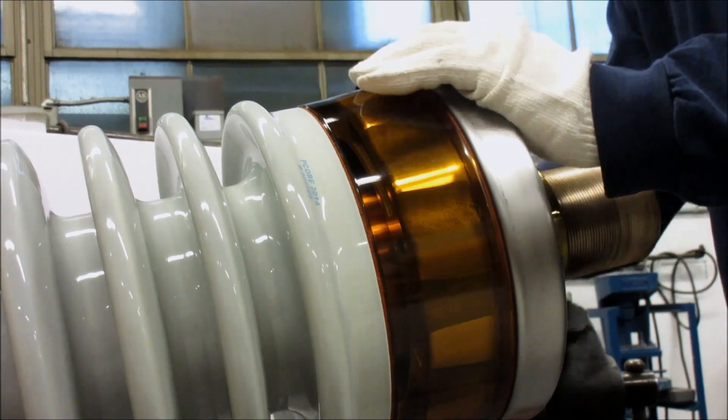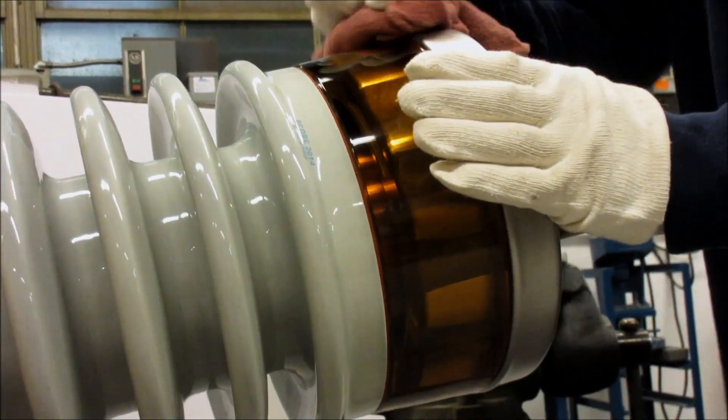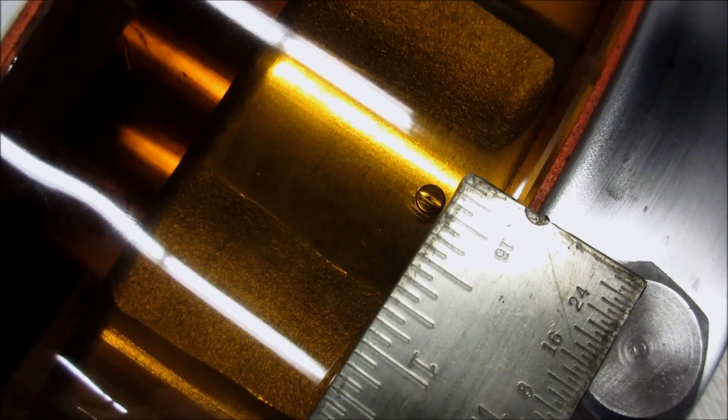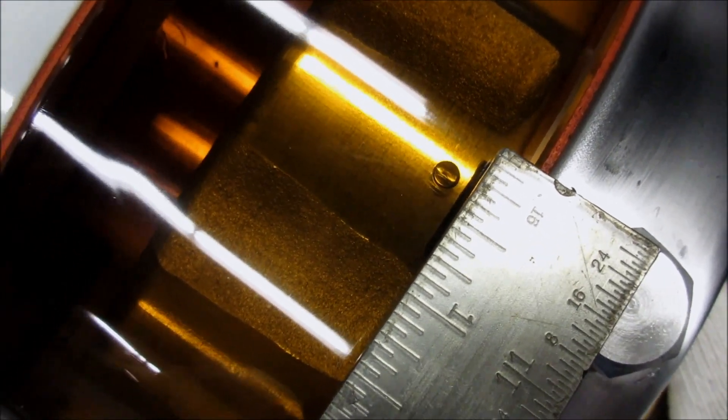If necessary, repeat steps five through six until some oil comes out of the fill hole in the top cover and any air bubble that remains in the top cover is less than one quarter inch in diameter.